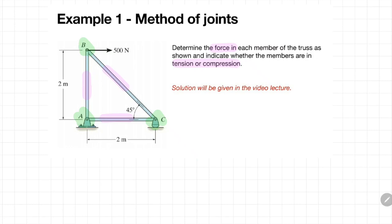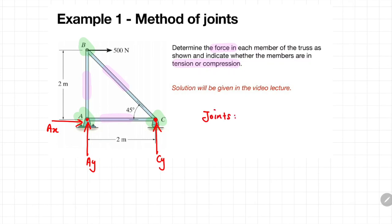Before proceeding with the method of joints, let us first draw the support reaction forces at each joint. At joint A, which is a pin joint, the support reactions are in the horizontal direction, called Ax, and the vertical direction, called Ay. At joint C, which is a rocker type joint, the reaction force is in the vertical direction and we call it Cy. The structure has three joints: A, B, and C.